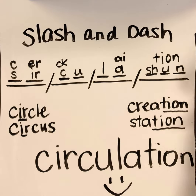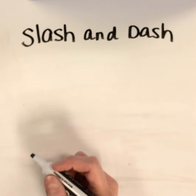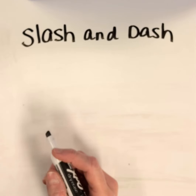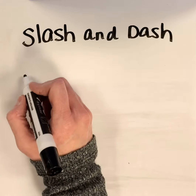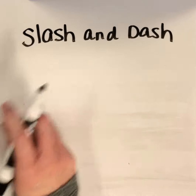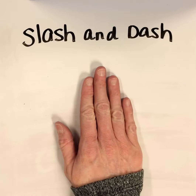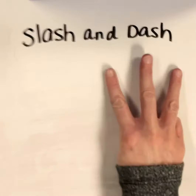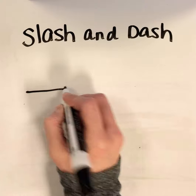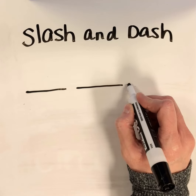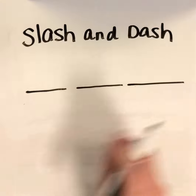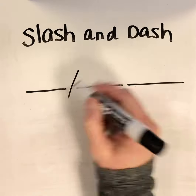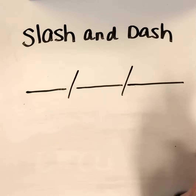All right, let's do one more slash and dash, so make sure you have your notebook out. This time we're going to spell the word 'atmosphere.' The atmosphere is the place in the earth that surrounds us, so atmosphere. We're first going to do our syllables, so let's see how many syllables we have. At-mo-sphere. At-mo-sphere. All right, so I've got at-mo-sphere — actually 'sphere' is kind of like one syllable. So I'm going to slash those so I can tell where the syllables get separated.